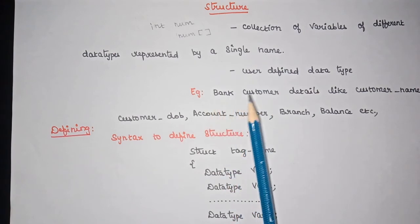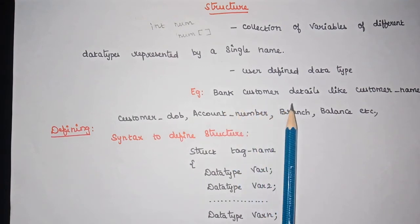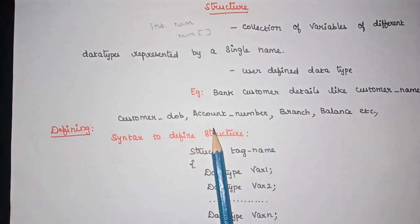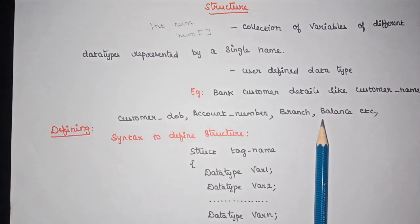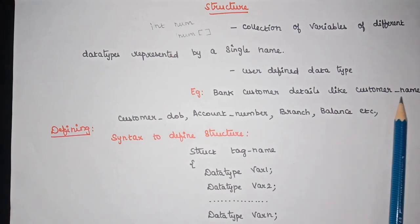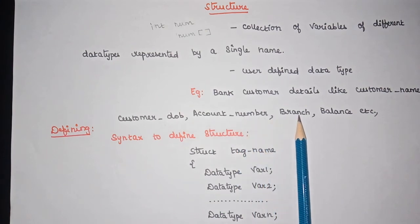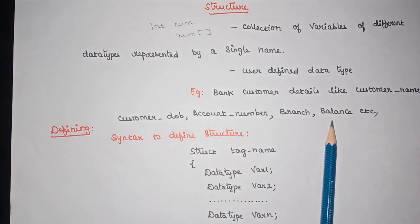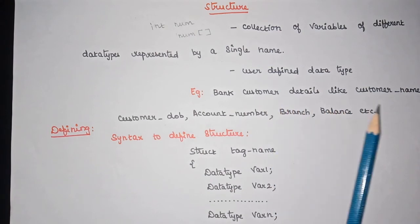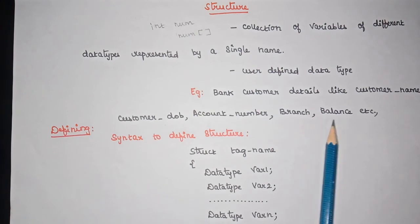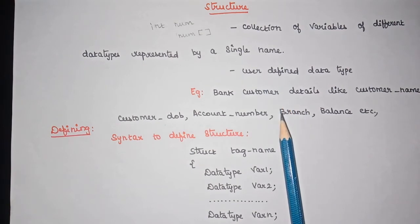For example, we can use a structure to store bank customer details. Those details involve customer name, customer date of birth, account number, branch name, and balance amount. Customer name is a string type, date of birth and account number are integer type, branch name is string type, and balance is a floating type value. So here we have a collection of data items of different data types, and when we need to store these kinds of data, we can go for the structure concept.